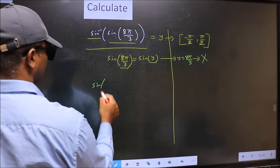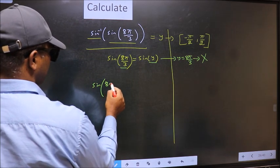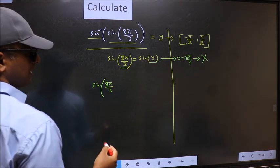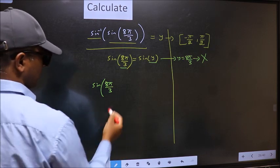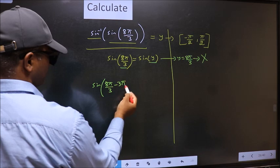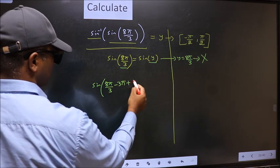Sin(8π/3). 8π/3 is exceeding that interval. So what I do is I should subtract 3π. Whatever I subtracted, I should add the same thing.